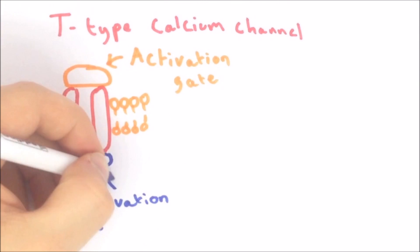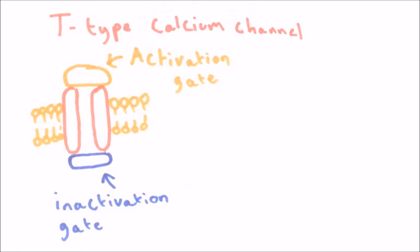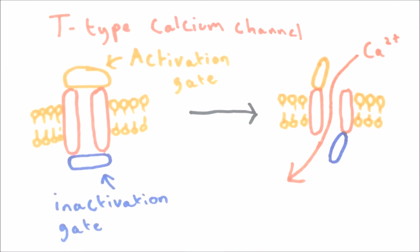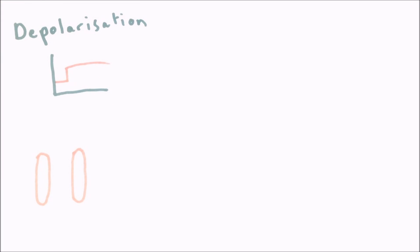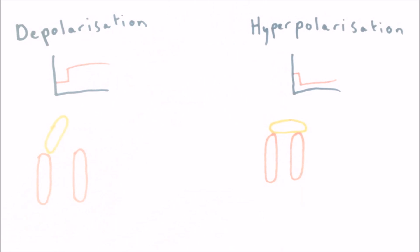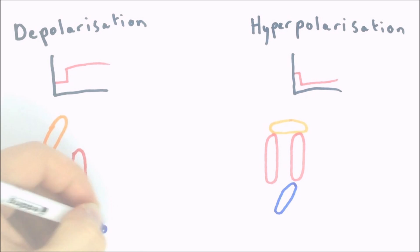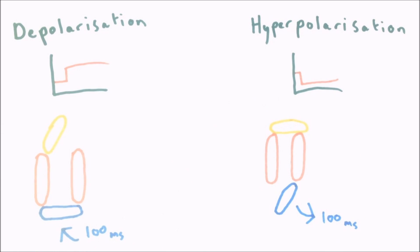This channel contains two gates: an activation gate and an inactivation gate. Both need to be open for calcium to flow through the channel. The activation gate is opened rapidly by depolarization and closed rapidly by hyperpolarization, whereas the inactivation gate is the opposite — it is opened by hyperpolarization and closed by depolarization. Crucially, this gate is very slow to open and close, taking about 100 milliseconds.